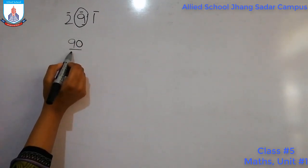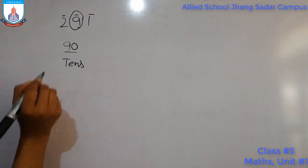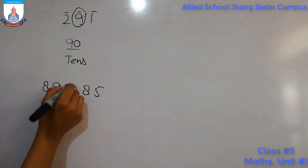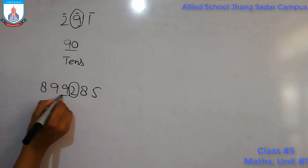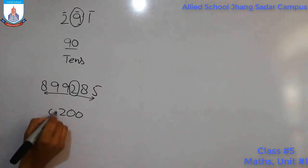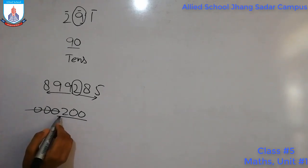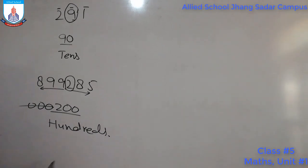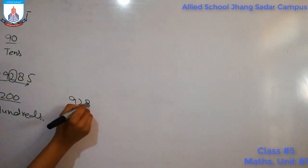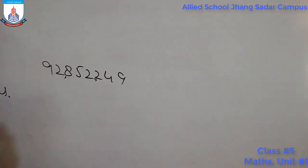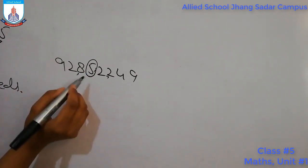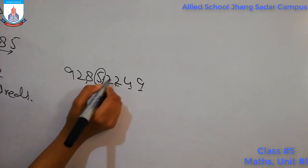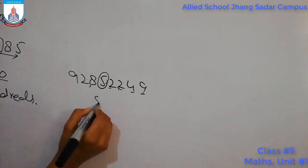So 9 has a place value of 90, because it is in the tens place. Now let's take another example with a larger number. Suppose we have to find the place value of 5 in a five-digit number. If 9 is units, 4 is tens, 2 is hundreds, 2 is thousands, then 5 is in the ten-thousands place, so its place value is 5000.